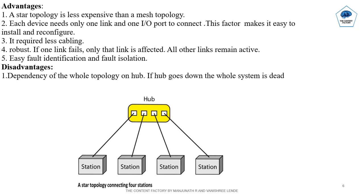Disadvantages of Star Topology: All stations are connected to the hub. If the hub is damaged, the whole topology will collapse.